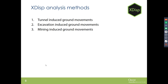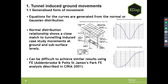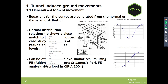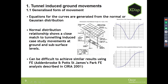In terms of analysis methods, XDISP deals with tunnel-induced, excavation-induced, and mining-induced ground movements. Starting with tunnel ground movements, XDISP uses empirical methods where the equations for settlement curves are generated from the normal or Gaussian distribution. The normal distribution shows a close match to tunnelling-induced case study movements at ground and subsurface level, and there are papers noting it can sometimes be difficult to achieve similar results using 3D finite element analysis — for example, the Adam Brooks and Potts paper.